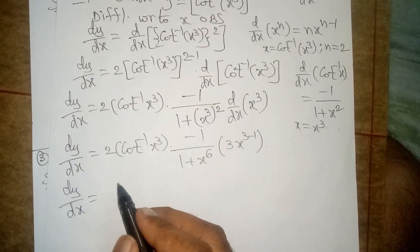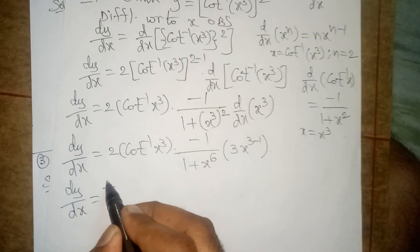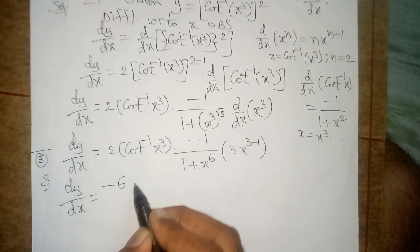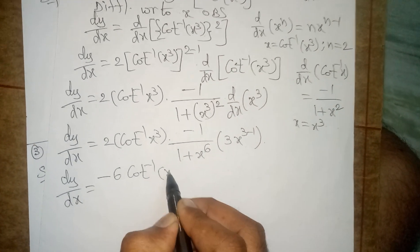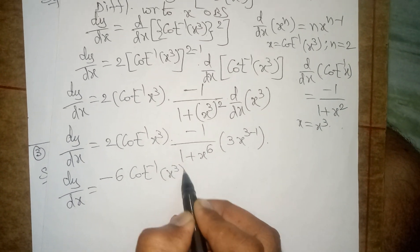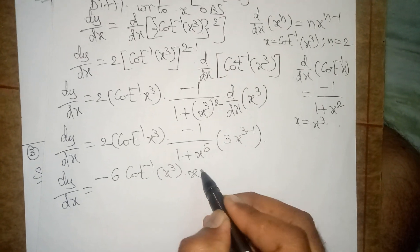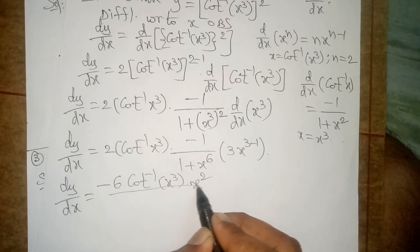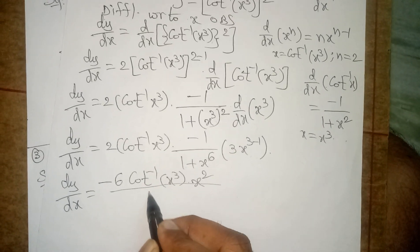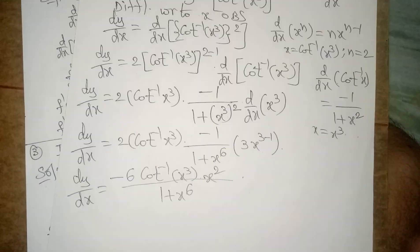The last step: dy by dx is equal to — combining plus and minus gives minus — minus 2 into 3 is 6, into cot inverse x cube, into x power 3 minus 1 which is x power 2, divided by 1 plus x power 6. This is the final answer.